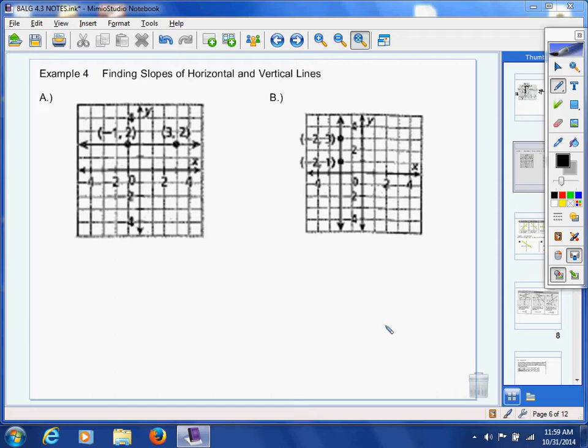Now examples 4 and 5, example 4 is focusing on finding slopes that are horizontal and vertical lines. And so remember what we just learned in example 3. We just learned about rise over run and that is what we want to use here.